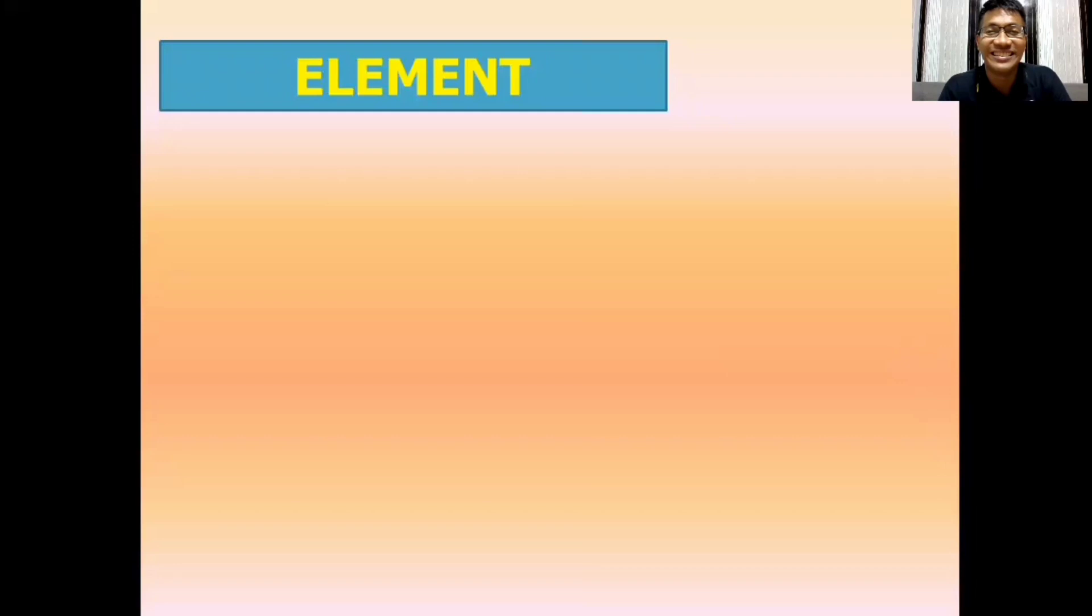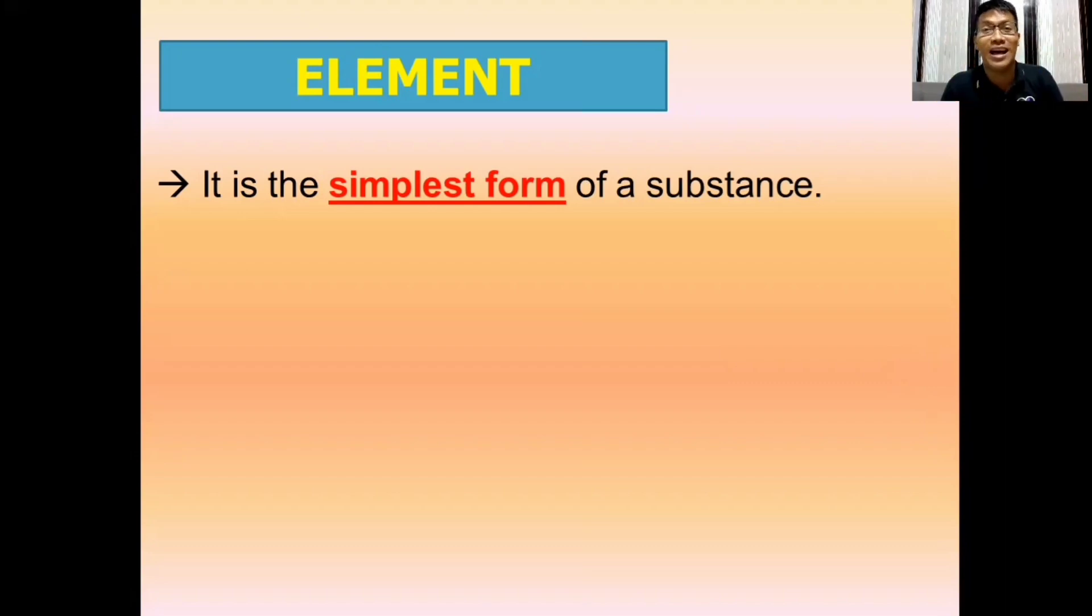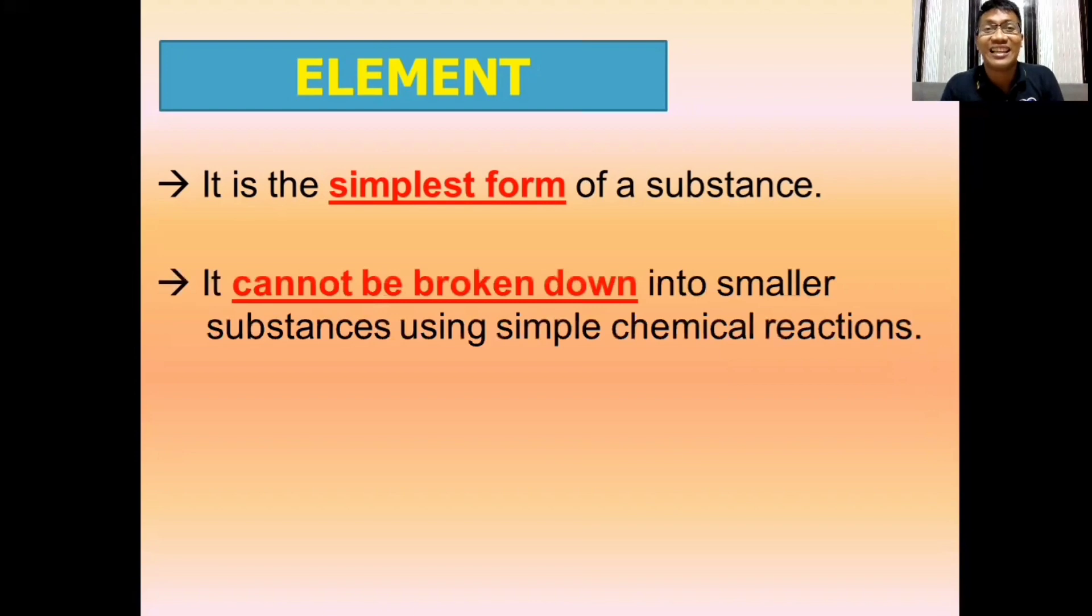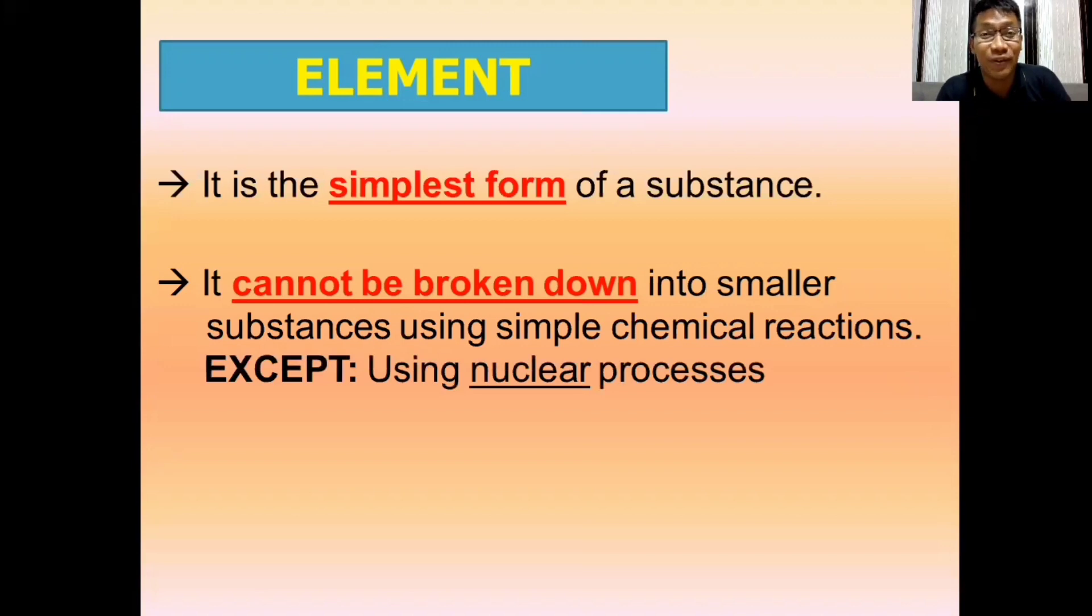What is an element? Element is defined or described as the simplest form of a substance. It is the smallest form of a substance. Since it is the simplest form, it cannot be broken down into smaller substances using simple chemical reaction. This means it cannot be made smaller. However, there is an exception whenever we use nuclear processes. But this is only applicable for those elements that are very big in structure. So they can still be broken down into smaller elements. But you will further learn about this in higher chemistry or physics.